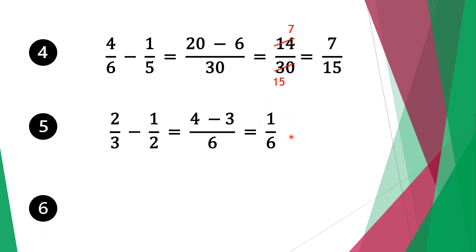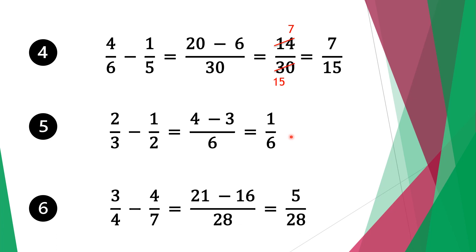Moving on to question six, we have three-quarters minus four over seven. Again we have different denominators, so we multiply four by seven to get twenty-eight. Twenty-eight is a common factor for four and seven. Twenty-eight divided by four is seven, seven times three is twenty-one. Do the same for the second fraction: twenty-eight divided by seven is four, four times four is sixteen.